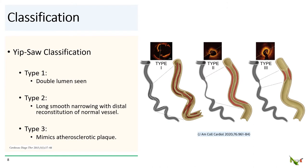SCAD is often classified using the Yip-Saw classification. Type 1 is the classic version, as we have in our patient, with communication between the true and the false lumen, a double lumen, and dissection flap clearly seen on angiography. Type 2 is essentially a long intramural hematoma with no communication between the false lumen and the true lumen. On angiography, type 2 SCAD has the appearance of a sudden taper in the caliber of the blood vessel with distal reconstitution of normal vessel, and no dissection flap is seen.